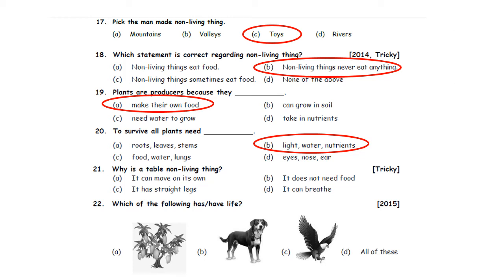Why is a table a non-living thing? Option A: It can move on its own. Option B: It does not need food. Option C: It has straight legs. Option D: It can breathe. Table cannot move on its own, so Option A is wrong. Non-living things do not need food. A table cannot breathe either. So, a table is a non-living thing because it does not need food. Option B is the correct answer.